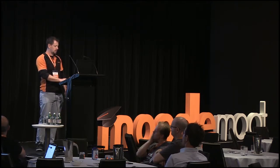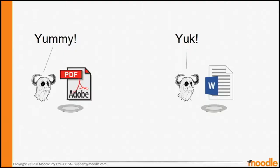Ghost Script itself likes to eat PDF files, but it doesn't like Word files, or other kinds of Office documents like PowerPoints, spreadsheets, and HTML files. It only knows how to read that one kind of file, so we need something to make the conversion easier.